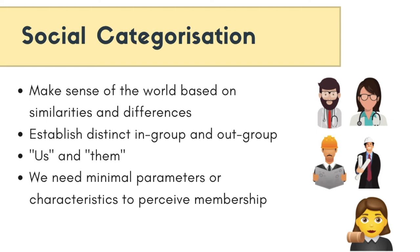Social categorization is the process of classifying people into distinct groups based on shared characteristics or attributes. This could be as simple as the gender you associate with, and as complex as having like-minded objectives with a political party you identify with. People can categorize and even develop a social identity based on minimal parameters and similarities. Once social categorization has been achieved, we can differentiate between our in-groups and out-groups — the us and them — which helps us understand the social world around us.